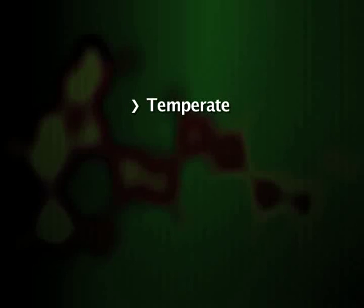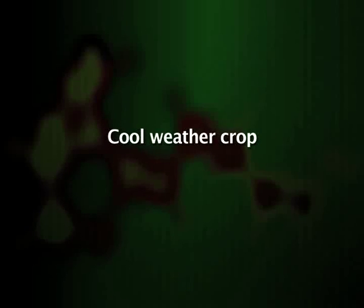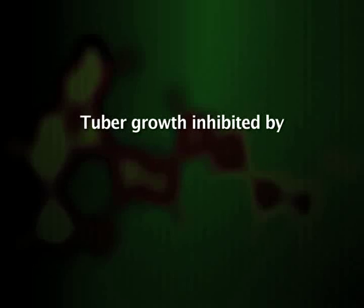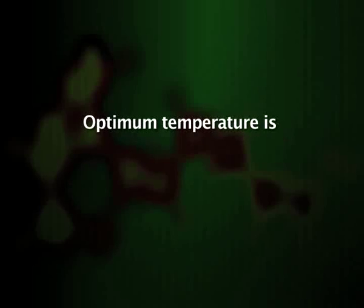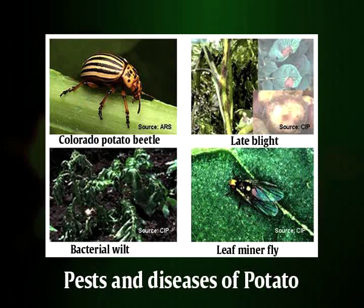Potato can be grown under temperate, subtropical and tropical conditions. It is essentially a cool-weather crop, with temperature being the main limiting factor. Tuber growth is sharply inhibited by temperatures below 10°C and above 30°C; optimum yields are obtained where mean daily temperatures are in the 18–20°C range. The potato is a very accommodating and adaptable plant, but it is vulnerable to a number of pests and diseases. To prevent build-up of pathogens in the soil, farmers avoid growing potato on the same land year after year, instead growing potatoes in rotations of three or more years, alternating with dissimilar crops such as maize, beans and alfalfa.